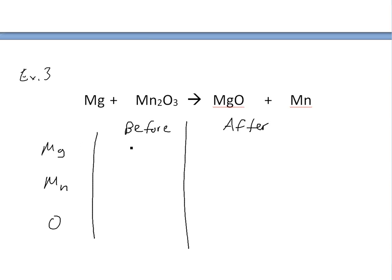Before after. And then again the before Mg is just one. There's only three elements here. Mg is one. Mn is two. O is three.